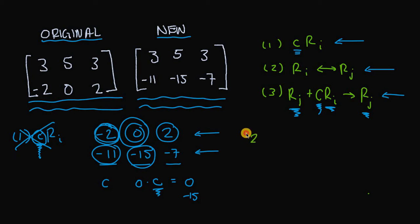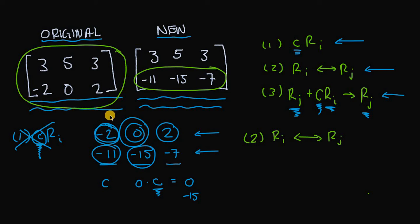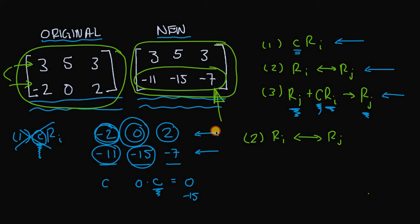How about rule two? Rule two says we can take one row and interchange it with another row. But if we look at the new matrix, row two — negative 11, negative 15, and negative seven — is nowhere to be found in the original matrix. So there's no way we could swap two rows in the original matrix and produce this new matrix, because row two of the new matrix simply doesn't exist in the original.